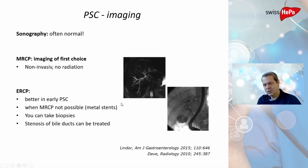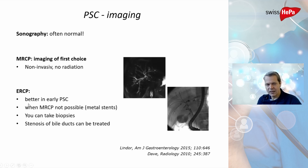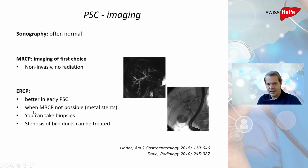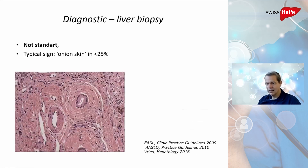Another way to visualize the bile ducts is via gastroscopy using ERCP, where a small catheter is inserted into the bile duct and contrast media is injected. The bile ducts then appear like pearls on a string, showing strictures where inflammation is present. ERCP can be used therapeutically to open those strictures — for example, by placing a metal stent. It also allows biopsies. In patients with metal implants where MRCP is not possible, ERCP is especially valuable.